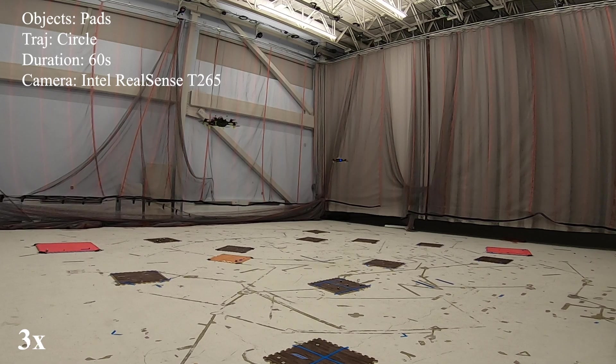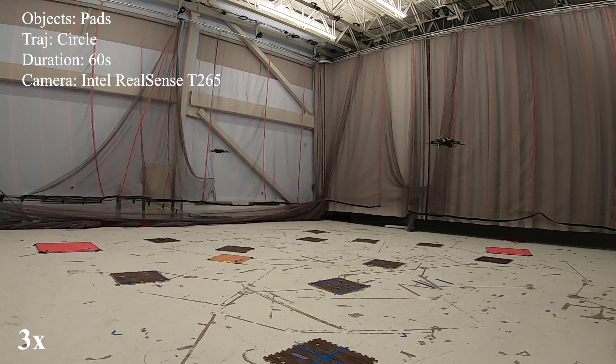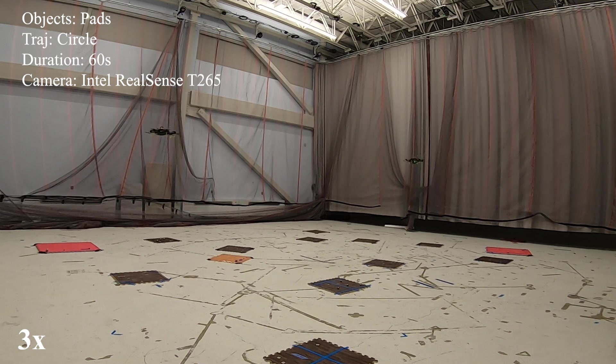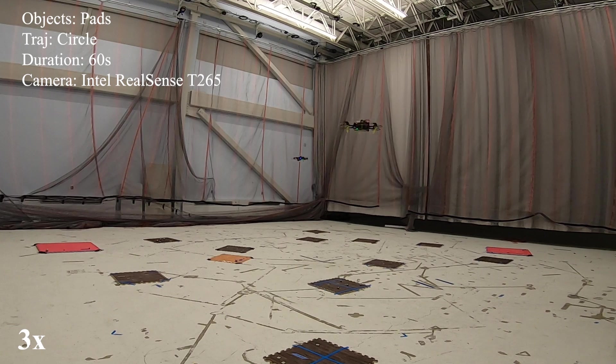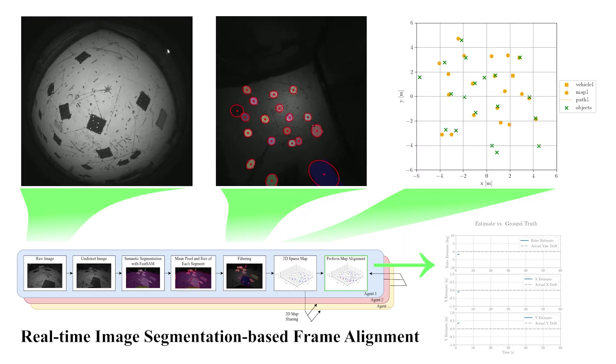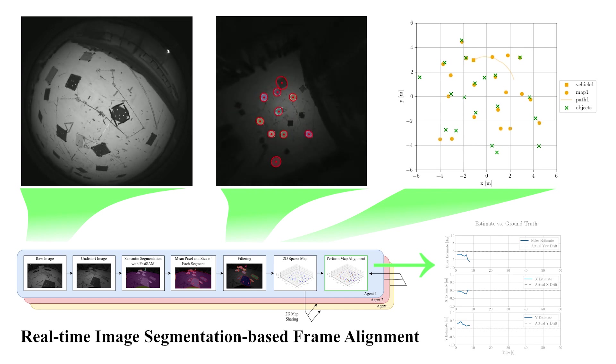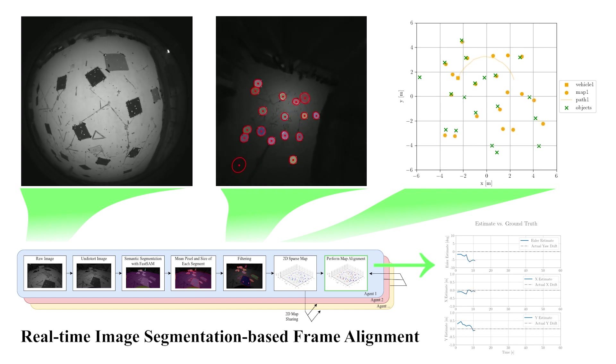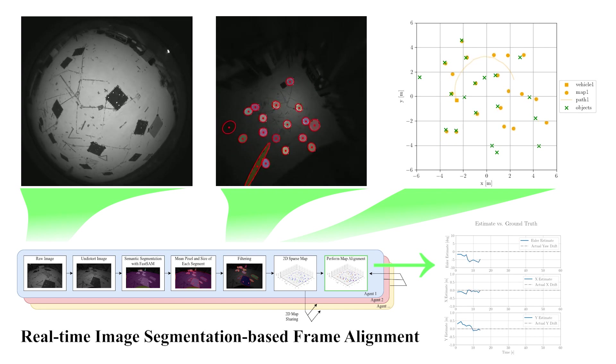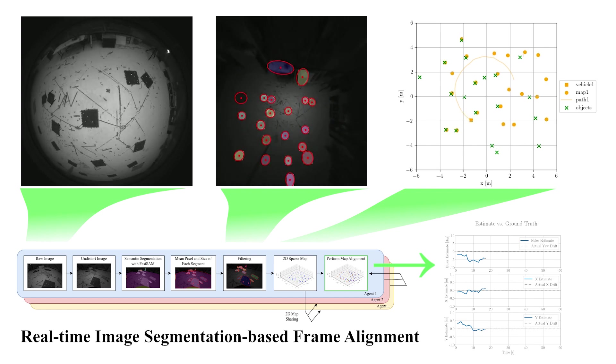We also tested our pipeline in hardware experiments. We flew two agents equipped with Intel NUC and Intel RealSense in a circular trajectory and performed real-time image segmentation and frame alignments. As described before, the pipeline takes raw images, runs the image segmentation algorithm, creates a sparse map, and executes frame alignments in real-time onboard.